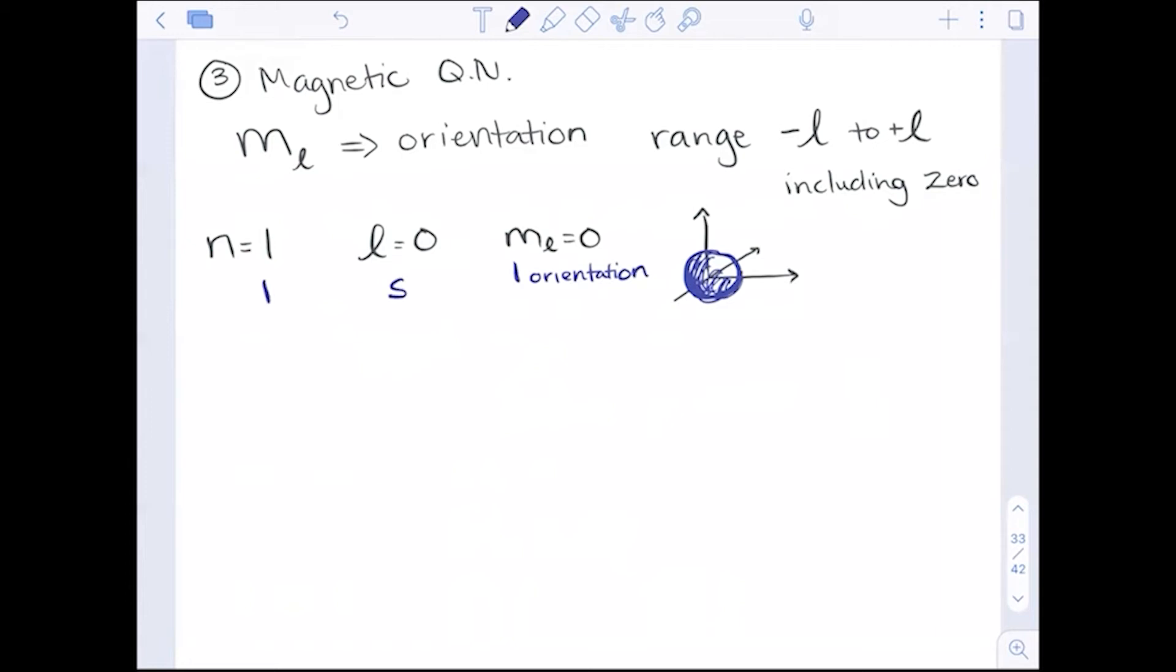When n equals 2 and l equals 0, m_l also equals 0. The 2s orbital has one orientation. No amount of rotating that ball will make it look different. Now here's where we get difference. When n equals 2 and l equals 1, the 2p orbital, if we plug in our options for ml, it's the range from minus l to plus l including 0. That is three orientations. The minus 1, the 0, and the plus 1. Three values there. So three orientations.